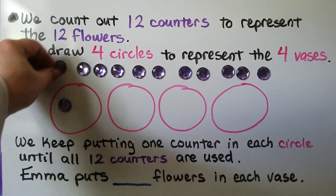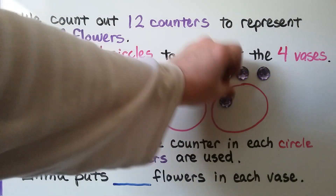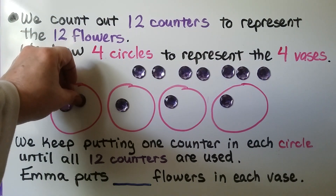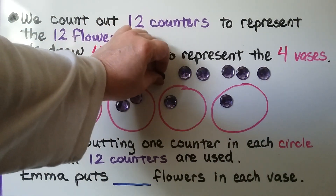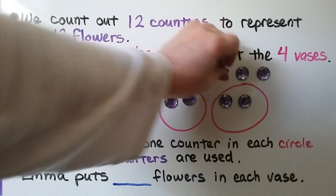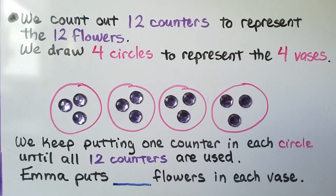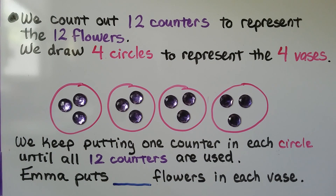We take turns putting one counter in each circle, going back and adding another one each round, and we keep taking turns putting counters into the circles so that we have equal groups and all the counters are used. We can see there are three counters in each circle. That means Emma puts three flowers in each vase. Splitting up 12 counters into four groups, we have three in each group.